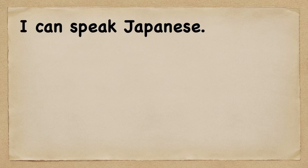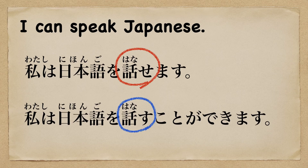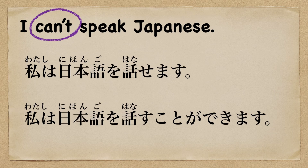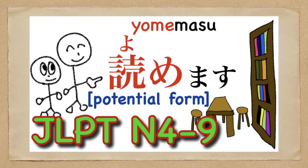Alright, next. From English to Japanese: I can speak Japanese. This is the potential form. There is also the way to say it using dictionary form. I can't speak Japanese — just change masu to masen. Please check this video.